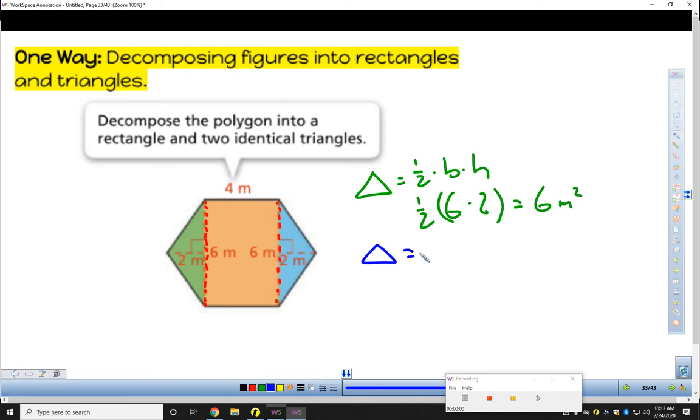Blue triangle. It looks like it has the same dimensions. Half of base is 6. Height is 2. 6 times 2 is 12. Half of that, again, 6 meters squared.